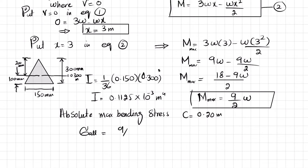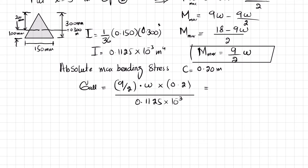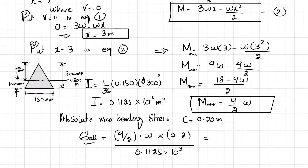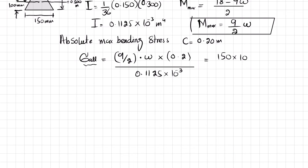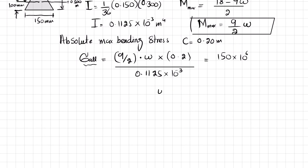Applying the bending stress formula: allowable stress equals M_max times c divided by I, so 150 times 10⁶ Pa equals (9w/2) times 0.2 divided by (0.1125 times 10⁻³). Solving for w gives w equals 18,750 N/m, or 18.75 kN/m.